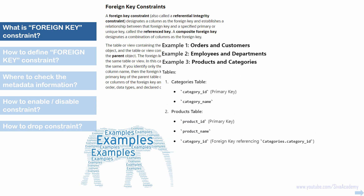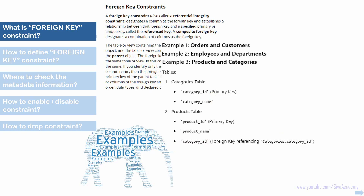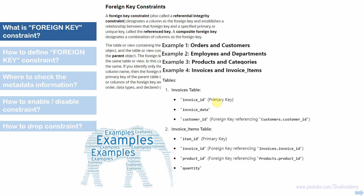One more example: product and categories. Before inserting into a product, a valid category must be defined in the categories table, ensuring all products are inserted with a valid category. In this case, we define a foreign key on the category ID of the product table, which refers to the category ID from the categories table. Another example is invoice and invoice items. Before invoice items are inserted into the child table, we ensure the header information about the invoice is already inserted into the invoice table by defining a foreign key on the invoice ID column referring to the invoice ID in the invoice table.